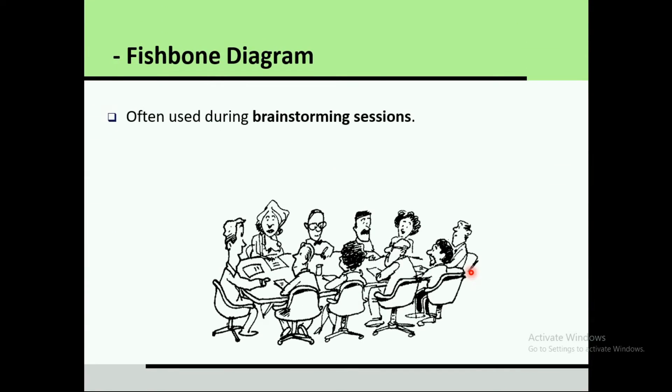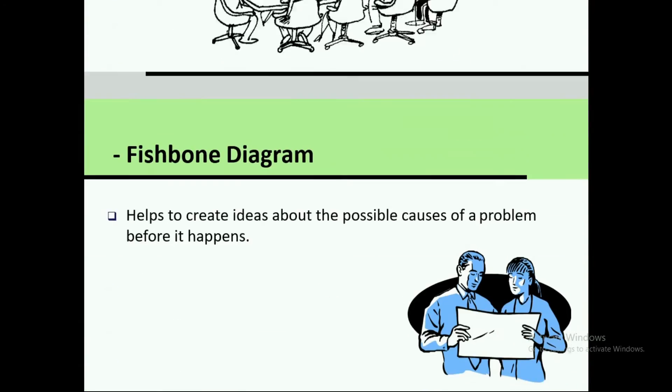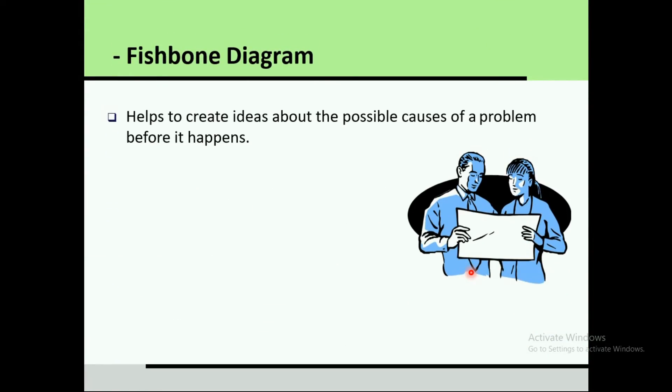You can identify the cause or primary cause through brainstorming sessions where everyone gains insight into cause and effect. Not only top management should be involved — machine operators and low-level management should also participate because they have experience and know the specific machines better. This makes the solution easier to find later on.